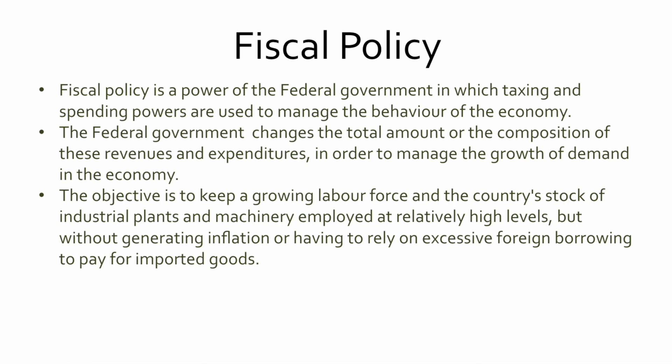The federal government changes the total amount or composition of revenues and expenditures in order to manage the growth and demand in the economy. If the economy is doing really well, government can reduce its spending, which would reduce total spending overall — since government makes up a big chunk of spending in our economy — and can actually slow down the economy and lower inflation. The objective of any government is to keep a growing labor force and the country's stock of industrial plants and machinery employed at relatively high levels, without having it go so hot that inflation is generated.